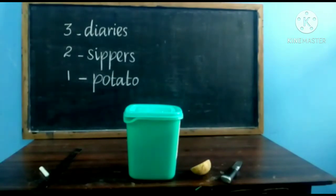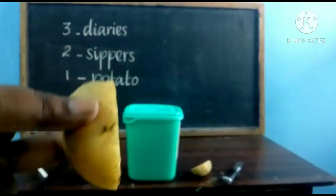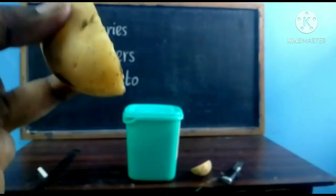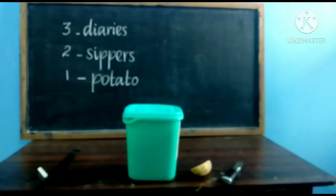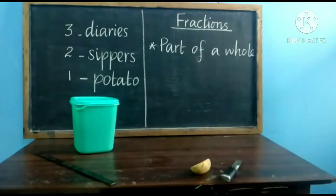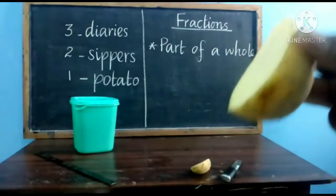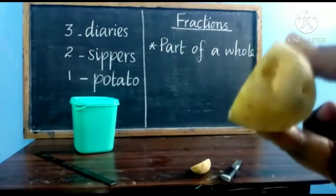We have a new concept to write the part of a whole thing as numbers. It is called as fractional numbers — it is called as fractions. We can say a fraction is part of a whole. First we saw a full potato, then I cut down the potato into 2 pieces. So this is part of a whole potato.